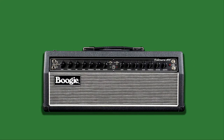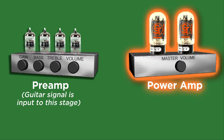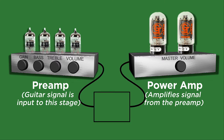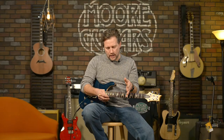Think of it this way: if you could take an amp apart, you run into the front and hit the preamp section, which has your gain and tone controls. Then there's the power amp section, which mainly amplifies the sound. In between those, you have an output from the preamp and an input back into the power amp — that's the effects loop. A lot of times you put your time-based effects like reverbs, delays, and modulation in the effects loop because you don't want to color those repeats with the preamp. What we're focused on now is why you'd want to put a compressor in the effects loop.